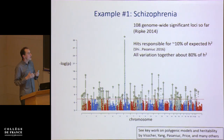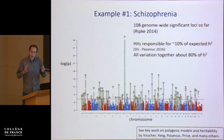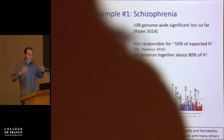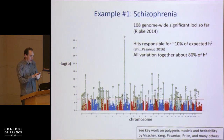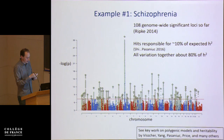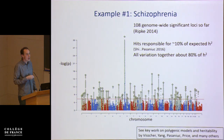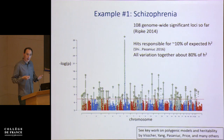However, estimates of how much heritability is accounted for by all SNPs together adds up to about 80%. So there's an enormous number of additional variants lurking in the bottom of this Manhattan plot that are not genome-wide significant. These have tiny effects, but because there are so many of them, they add together to explain most of what's going on in the genetics of schizophrenia.